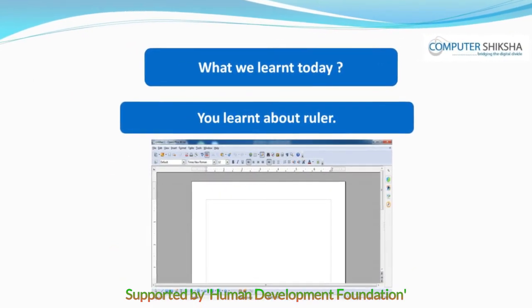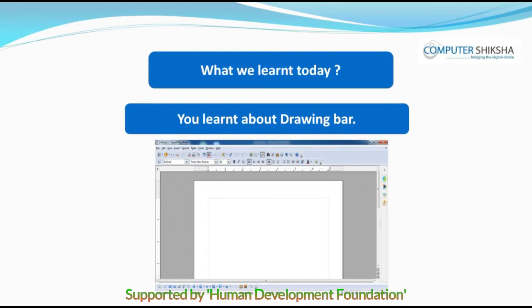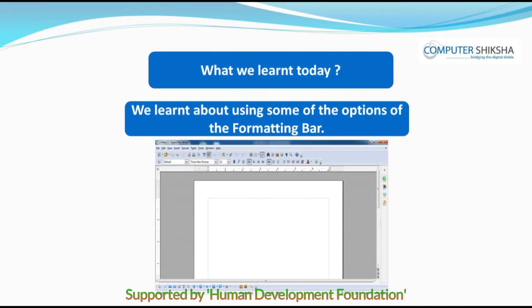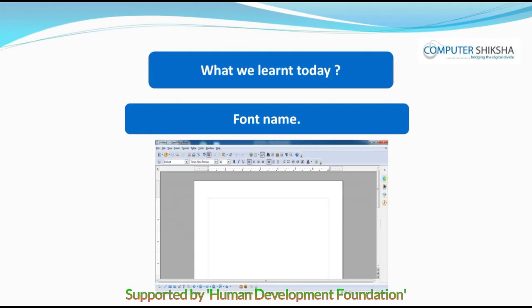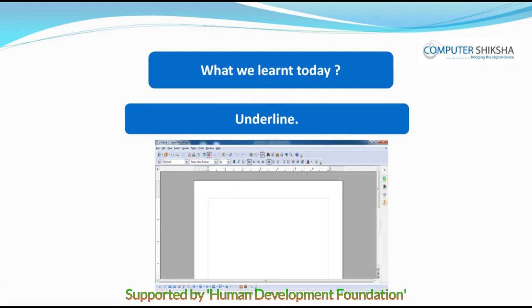In today's lesson, you all have learned about the Status Bar, Drawing Bar, and Text Boundaries. Then, you typed the paragraph. And towards the end of this class, you also learned about using some of the options of the Formatting Bar, like Font Name, Font Size, Bold, Italics, and Underline. Thank you.